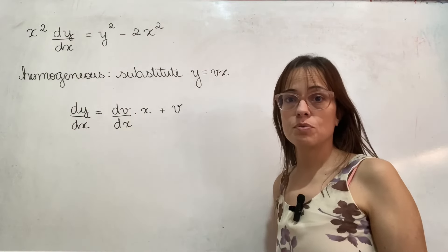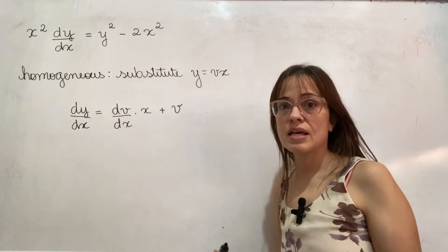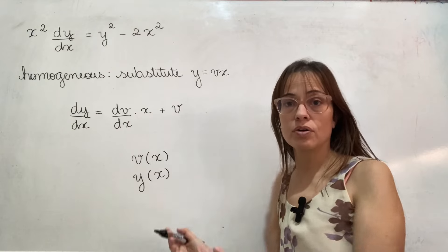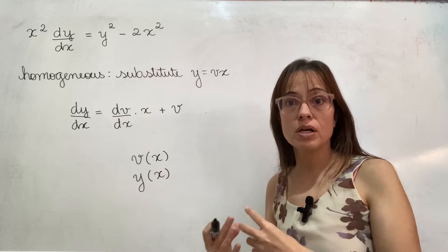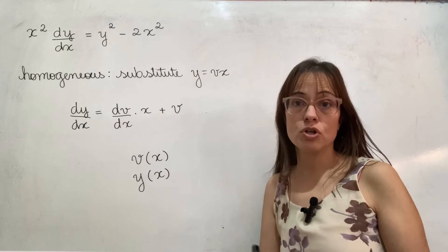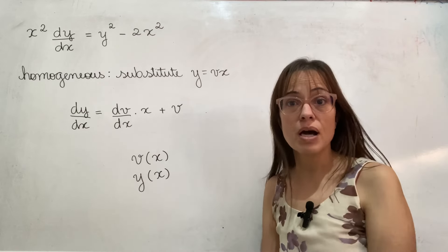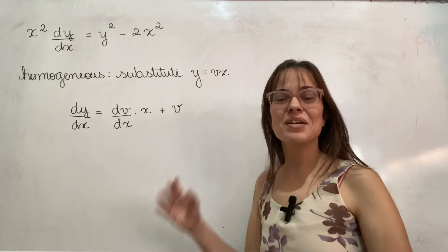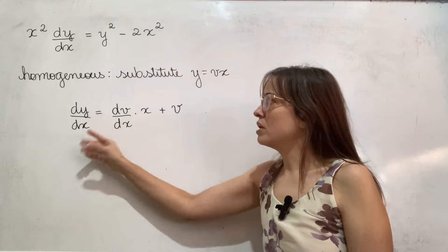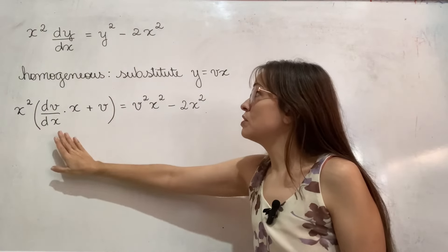I'm just going to follow the instruction in the problem and apply the substitution. The important part is to remember that v is not a constant — v is a function of x being multiplied by x. These things get confusing because in differential equations we tend to omit the notation that would tell us explicitly that v and y are functions of x. You have to keep in mind what is a function, what is an independent variable, and what is just a parameter like the k and n from before.